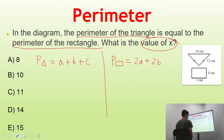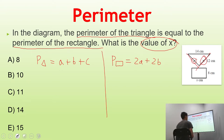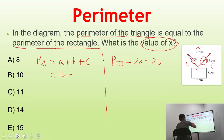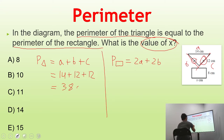Now let's fill in our values. For the triangle, we're given 14 centimeters at the top and 12 centimeters on one side. The tick marks on the diagram show that both of those sides are equal. So A is 14, B is 12, and C is also 12. Adding those together gives us 38 centimeters as the total perimeter of the triangle.